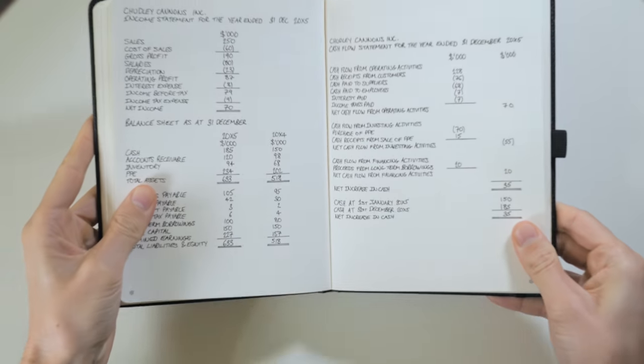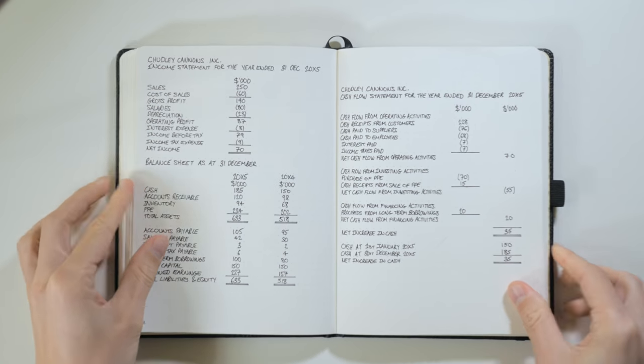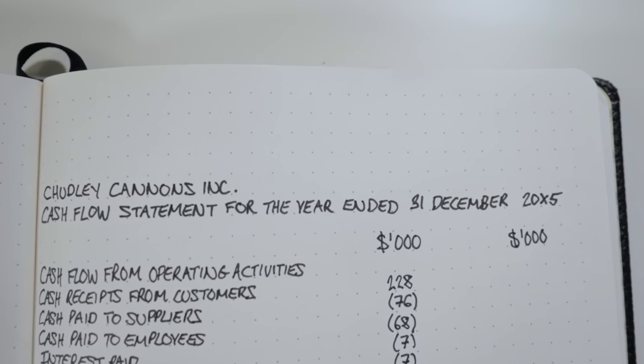The cash flow statement is one of the three main financial statements, along with the income statement and balance sheet. We have all three of them here made up for a company called Chudley Cannons Incorporated — a Harry Potter reference, inspired by re-listening to the audiobooks.